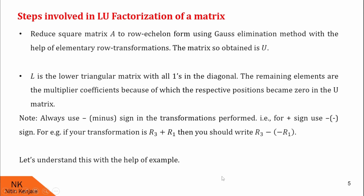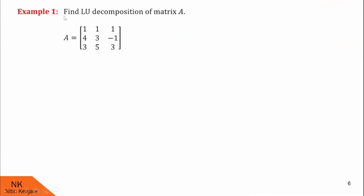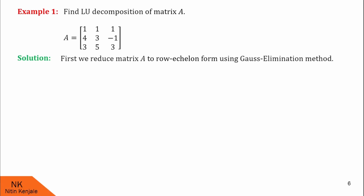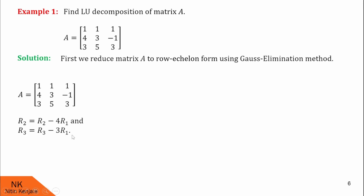Now let us understand this with the help of an example. We are asked to find the LU decomposition of the given matrix A. First we reduce matrix A to row echelon form using Gauss elimination method with elementary row transformations. I am going to use R2 = R2 minus 4 times R1, which will reduce the element 4 to 0, and then R3 = R3 minus 3 times R1, which will reduce that element to 0.